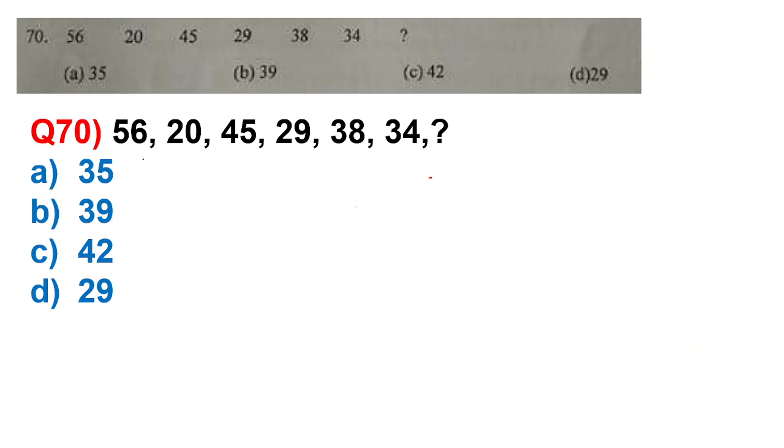Question number 70: 56, 20, 45, 29, 38, 34, question mark. This is a combination of two series. 20, 29, 34 versus 56, 45, 38. 29 to 20 difference is 9, 34 to 29 is 5. And the other series: 56 to 45 gap is 11, and 45 to 38 is 7. Gap of 4, gap of 4.